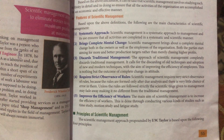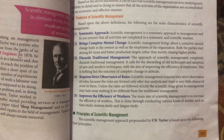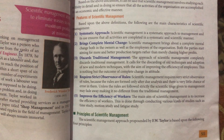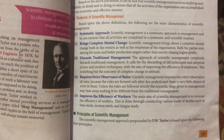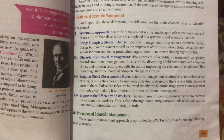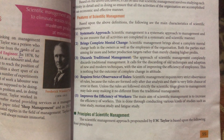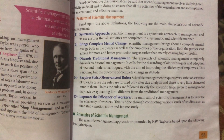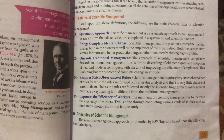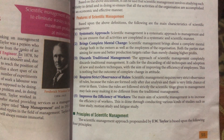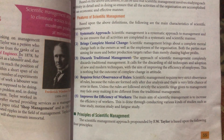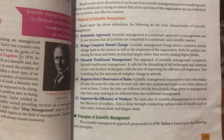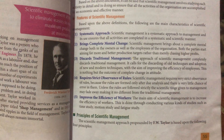The features of scientific management: first is systematic approach. Scientific management is a systematic approach to management, and its use ensures that all activities are completed in a systematic and scientific manner. F.W. Taylor said that whatever work is there, it must be done in a proper systematic way and in a scientific manner, meaning we must find the best way among all our alternatives.